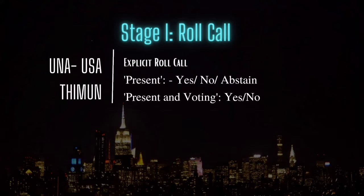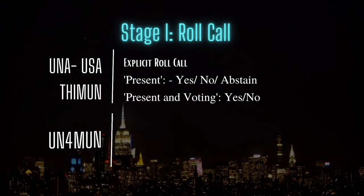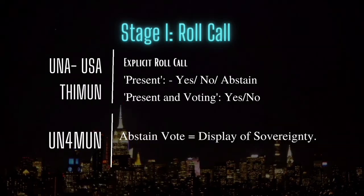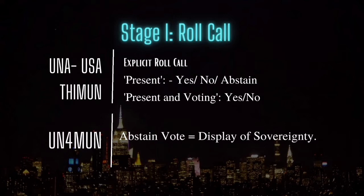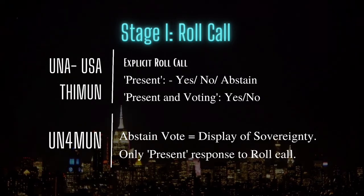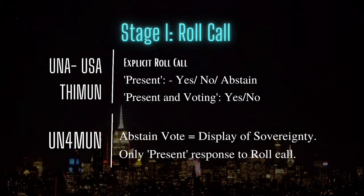The United Nations organization believes that abstaining from a vote is a display of a state's sovereignty. Thus, under UN4MUN procedure, which focuses on keeping the UN simulation realistic, the roll call is answered simply by 'present', implying that all nations are free under their sovereign rights to abstain during the later phases of the conference.